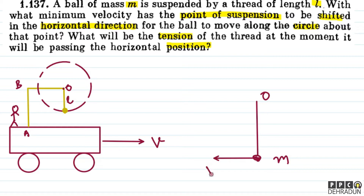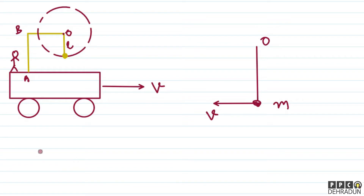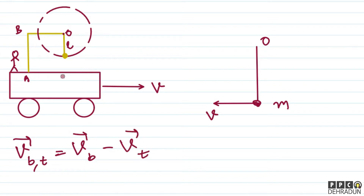If you talk about relative motion — if the trolley moves at speed V forward, then from the trolley's reference frame, the ball has speed V backward. So the velocity of the ball with respect to the trolley equals the velocity of the ball minus the velocity of the trolley.